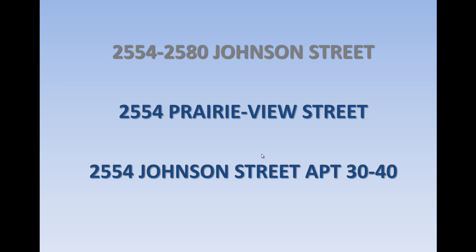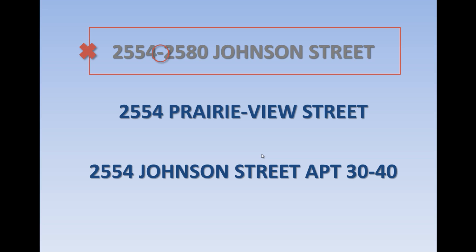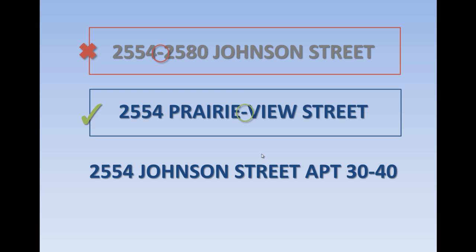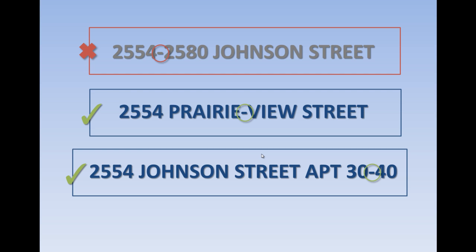Let's start by talking about hyphens. Hyphens can be indicative of an address number range, such as 2554-2580 Johnson Street, which indicates a range of addresses — this is unacceptable within the parcel project schema, as it is a range of addresses and not a single address. In some cases, hyphens may exist in acceptable addresses, such as a hyphenated street name like 2554 Prairie View Street, where Prairie View is the street name and a hyphen is acceptable. Another acceptable example is a unit ID indicating several units at a site address, such as 2554 Johnson Street, Apartment 3340, which indicates several units within one site address.